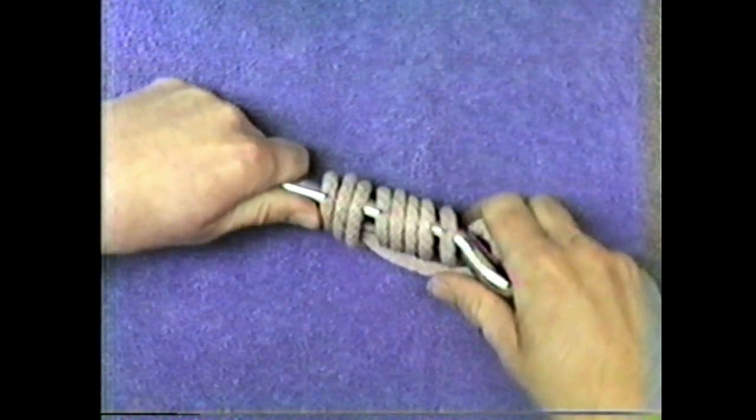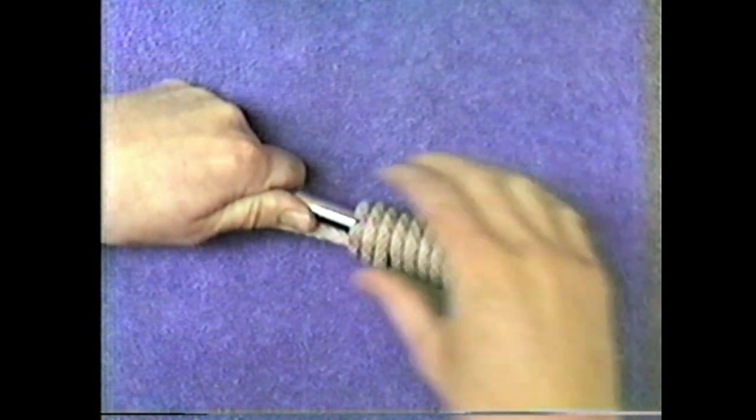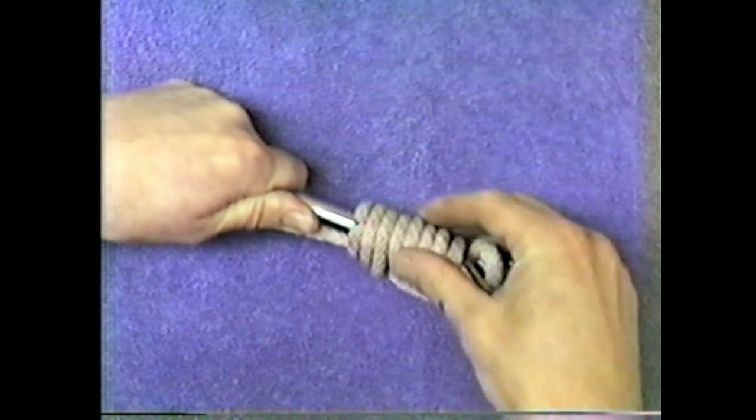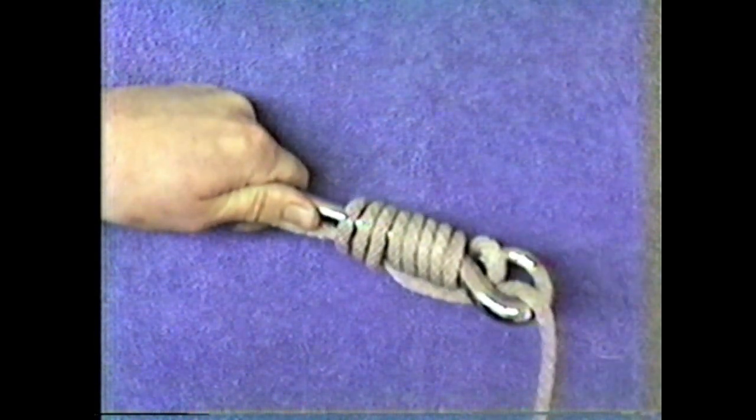The reason it's a bumper tie, you see how when the fish pulls, how it wants to snug itself up? It cushions the shock a little bit. You're going to find by not cinching your knots up tight, it's going to give you a little bit better holding power.